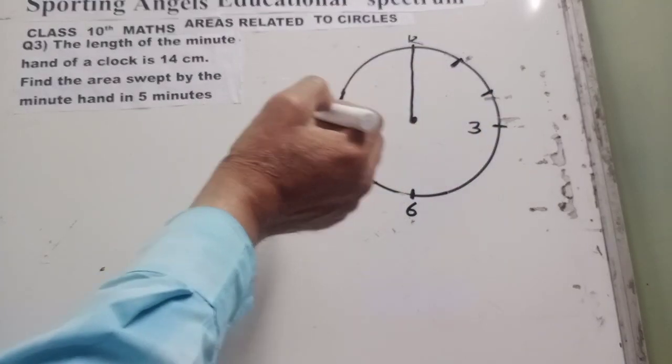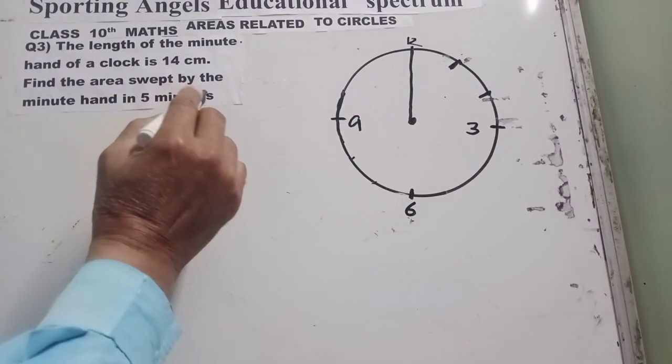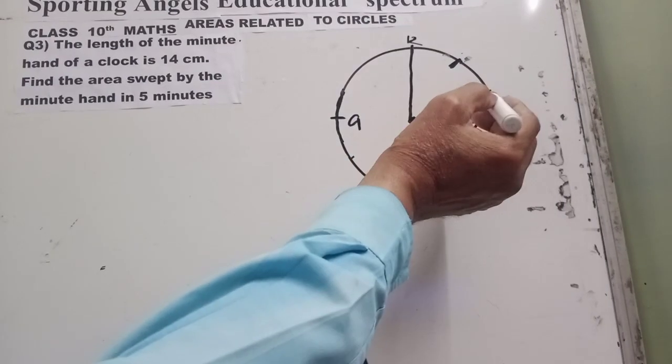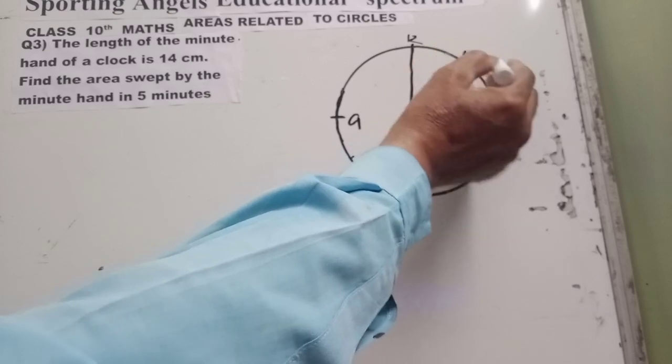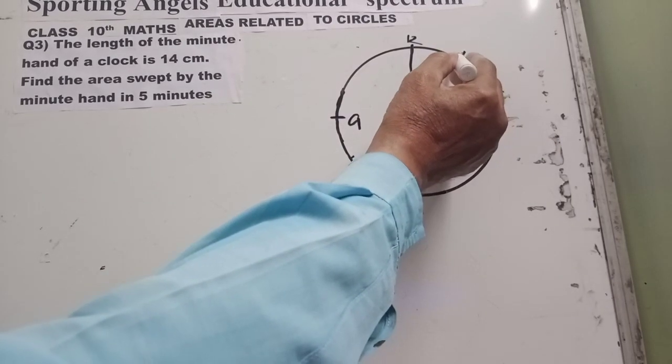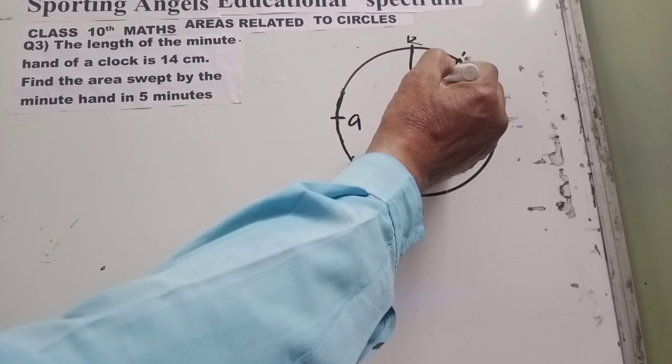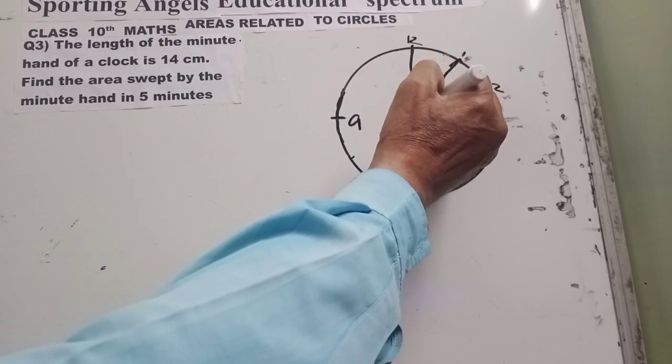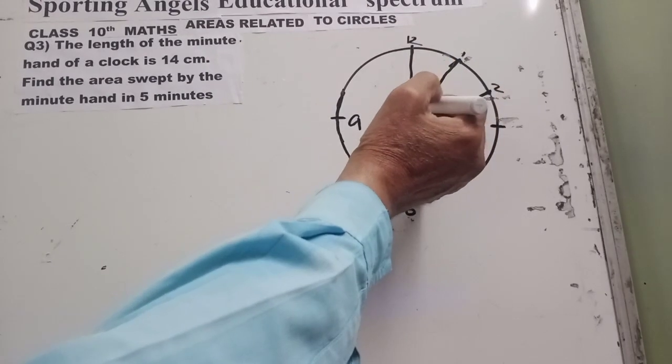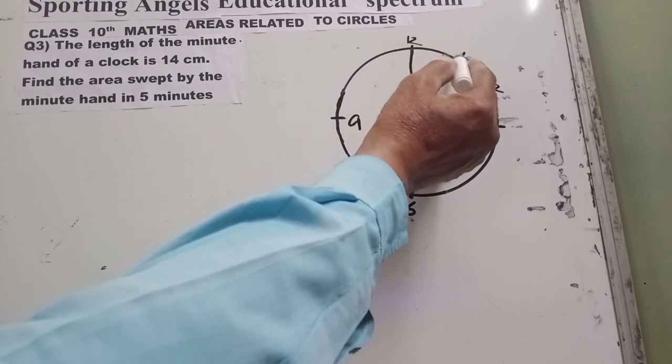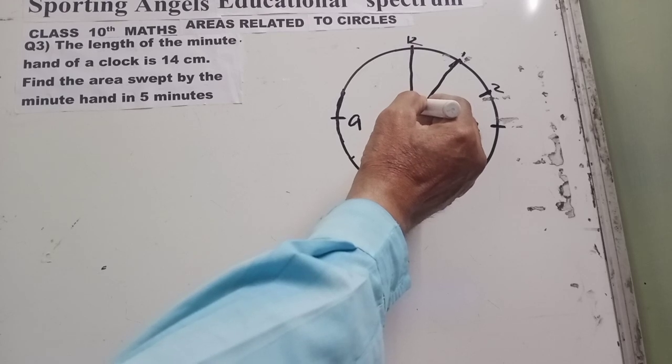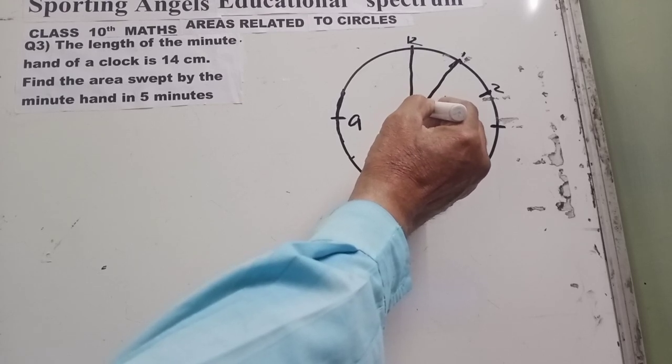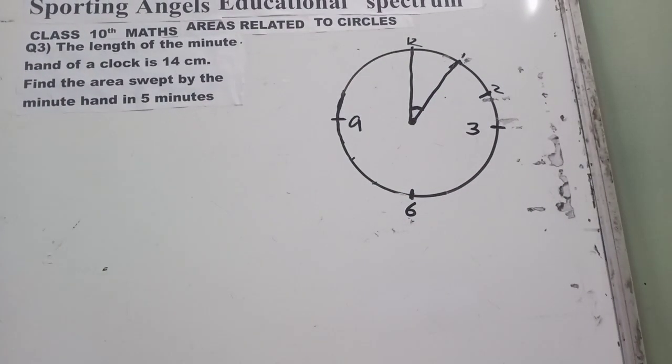It moves a distance of 5 minutes. So after 5 minutes, it should be here. When it moves from this place to this place, the angle, how much is the angle? This is what we should find out first.